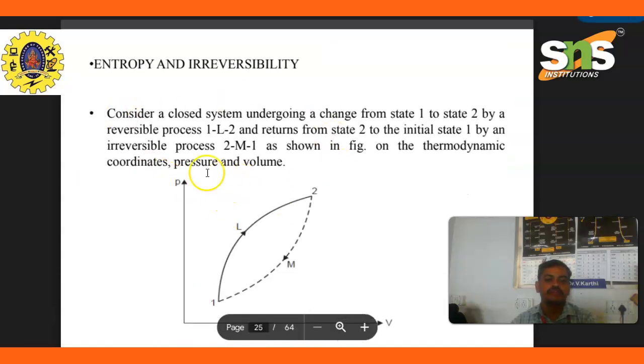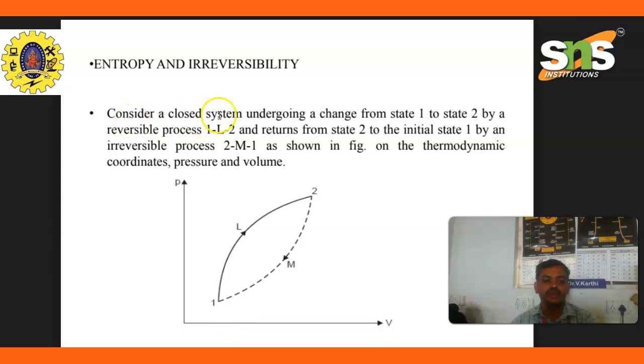Entropy and irreversibility: Consider a closed system undergoing a change from state 1 to state 2 by a reversible process 1-L-2, and returning from state 2 to initial state 1 by an irreversible process 2-M-1, as shown in the figure on thermodynamic coordinates pressure and volume.